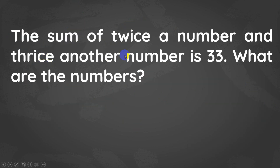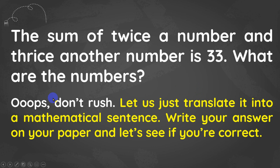The sum of twice a number and thrice another number is 33. What are the numbers? Let's just translate it into a mathematical sentence. Write your answer on a paper and let's see if you're correct.